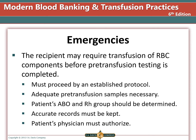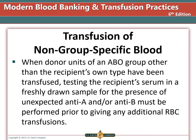The patient's ABO and RH group should still be determined and compatibility testing completed with the donor samples, even after blood has already been transfused. Accurate records of all transfusions are required, and the patient's physician must authorize issuance of emergency released units when pre-transfusion testing has not been completed. When donor units of a different ABO group have been transfused, testing the recipient's plasma for unexpected anti-A and anti-B must be completed before giving additional red cell units, to ensure no significant donor antibodies were transferred.